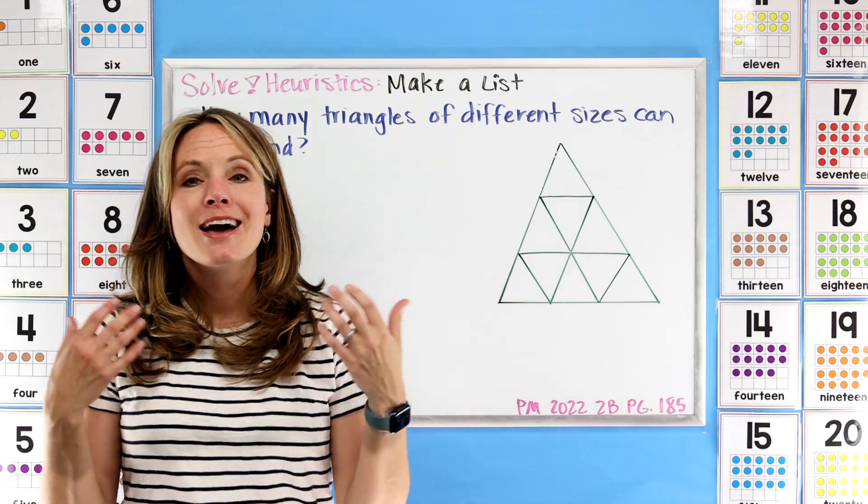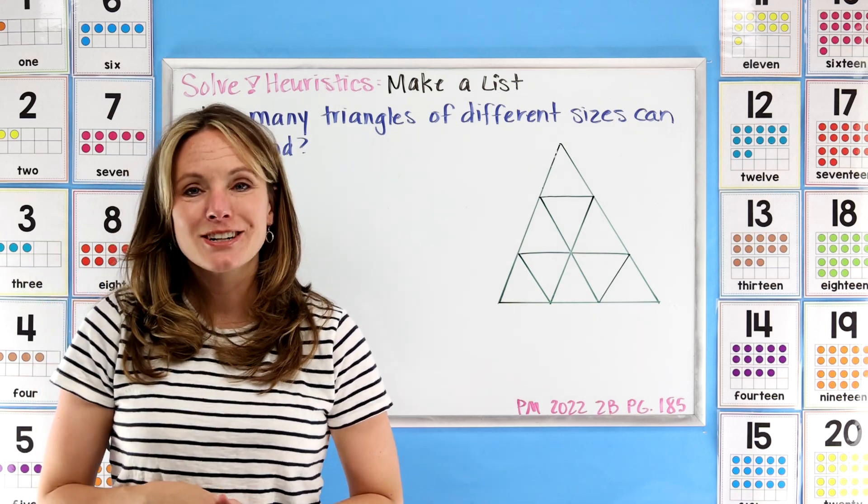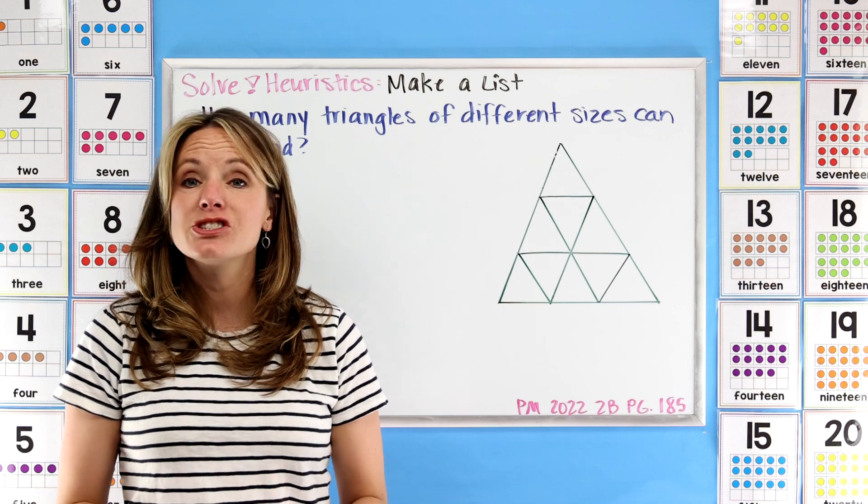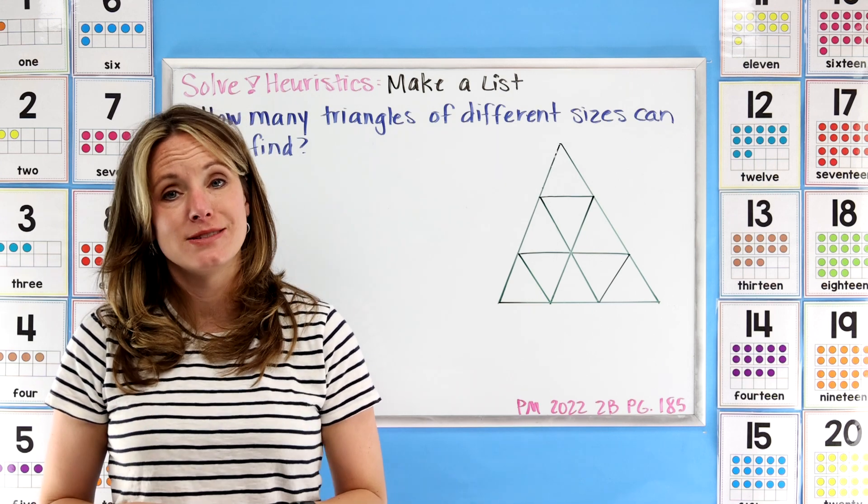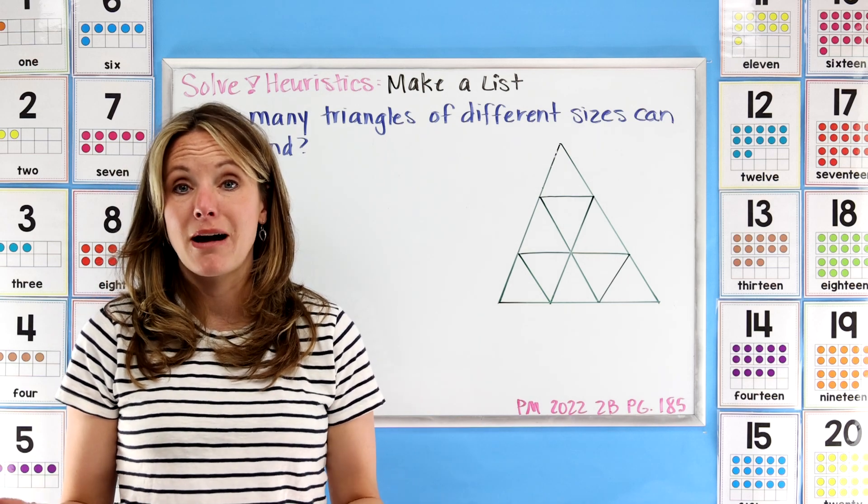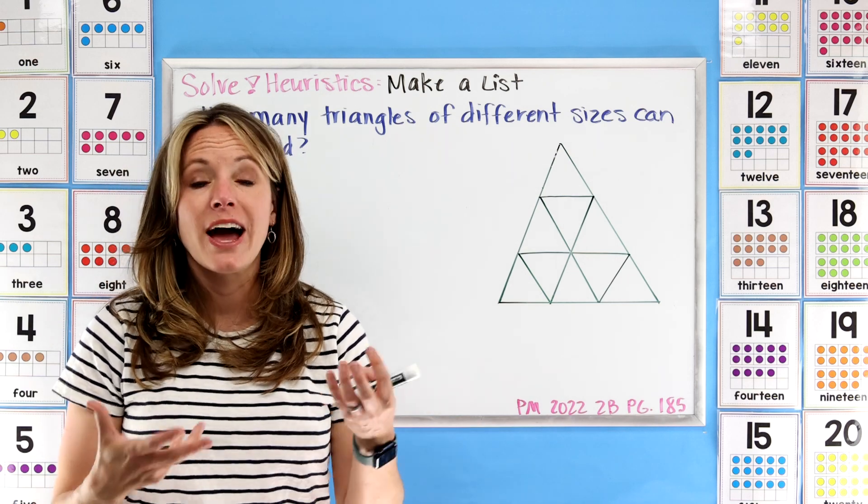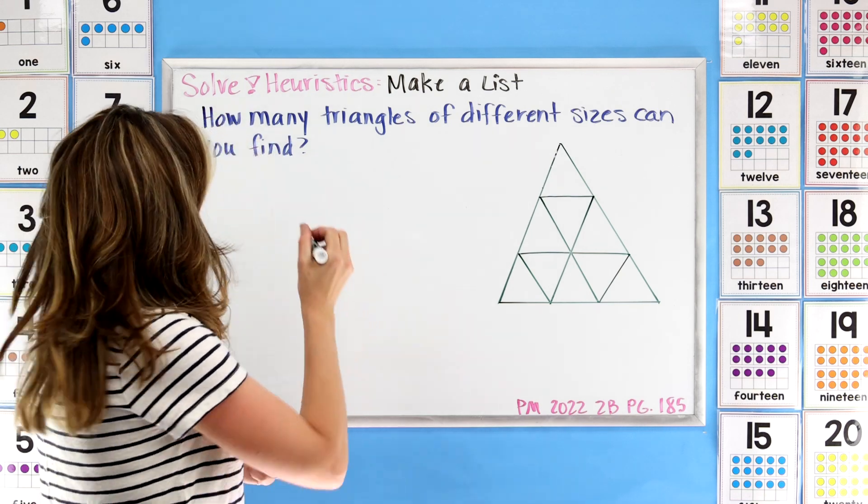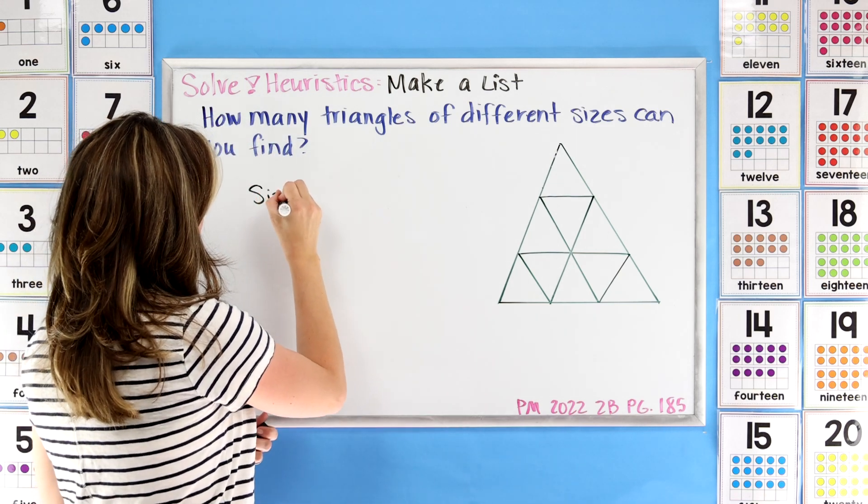Now I mentioned to you your list can look different because I just want you to think about how you organize information. So when we're considering this, I want us to just think about the size of the triangle and how many we can find. So for my list, that's all I'm going to put on here. I'm actually going to write 'Size' and then I'm going to write 'How Many.' That's all we're going to look for - the size of the triangle and how many.